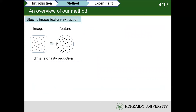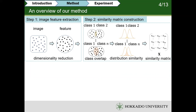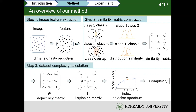Now, I'd like to show an overview of the proposed method. Our method consists of three steps. First, in step 1, we transform the image features from a high-dimensional space to a low-dimensional space. Then, in step 2, we use the downscaled image features to construct a similarity matrix between classes. Finally, we use the similarity matrix, calculate the Laplacian spectrum, and then calculate the complexity of data sites. I will introduce the details for each step in the following slides.